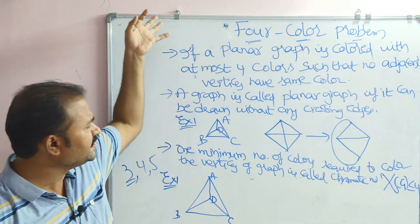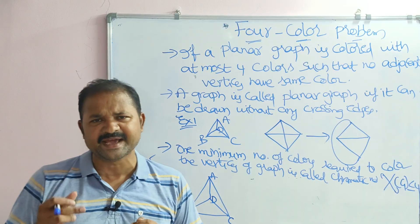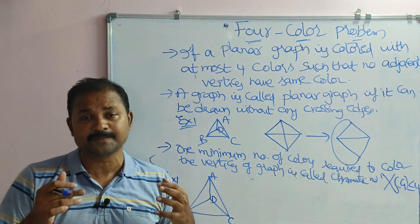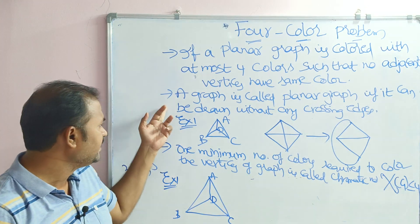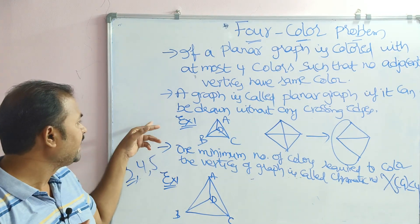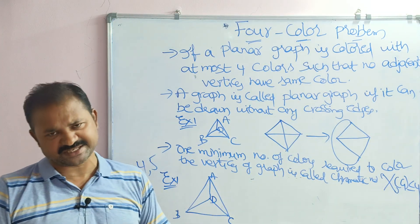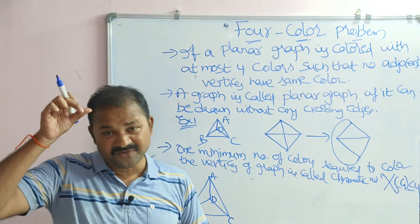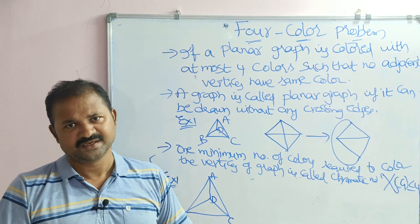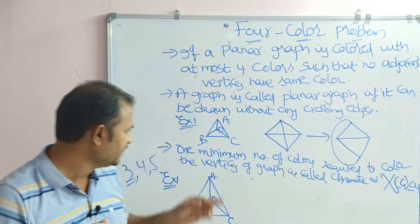To understand the four color problem definition, we must first understand planar graphs. By definition, a graph is called a planar graph if it can be drawn without any crossing edges.